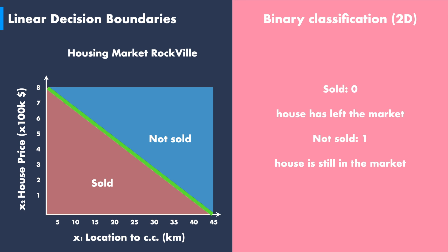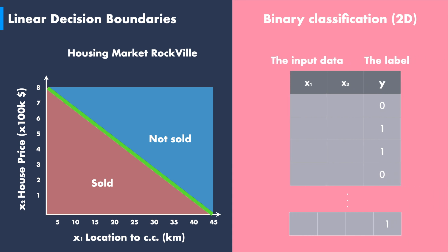We can give a value of 1 to any house that still has a standing offer in the market. This way, the label Y is filled with values of 0 and 1 for every corresponding set of input features x1 and x2.